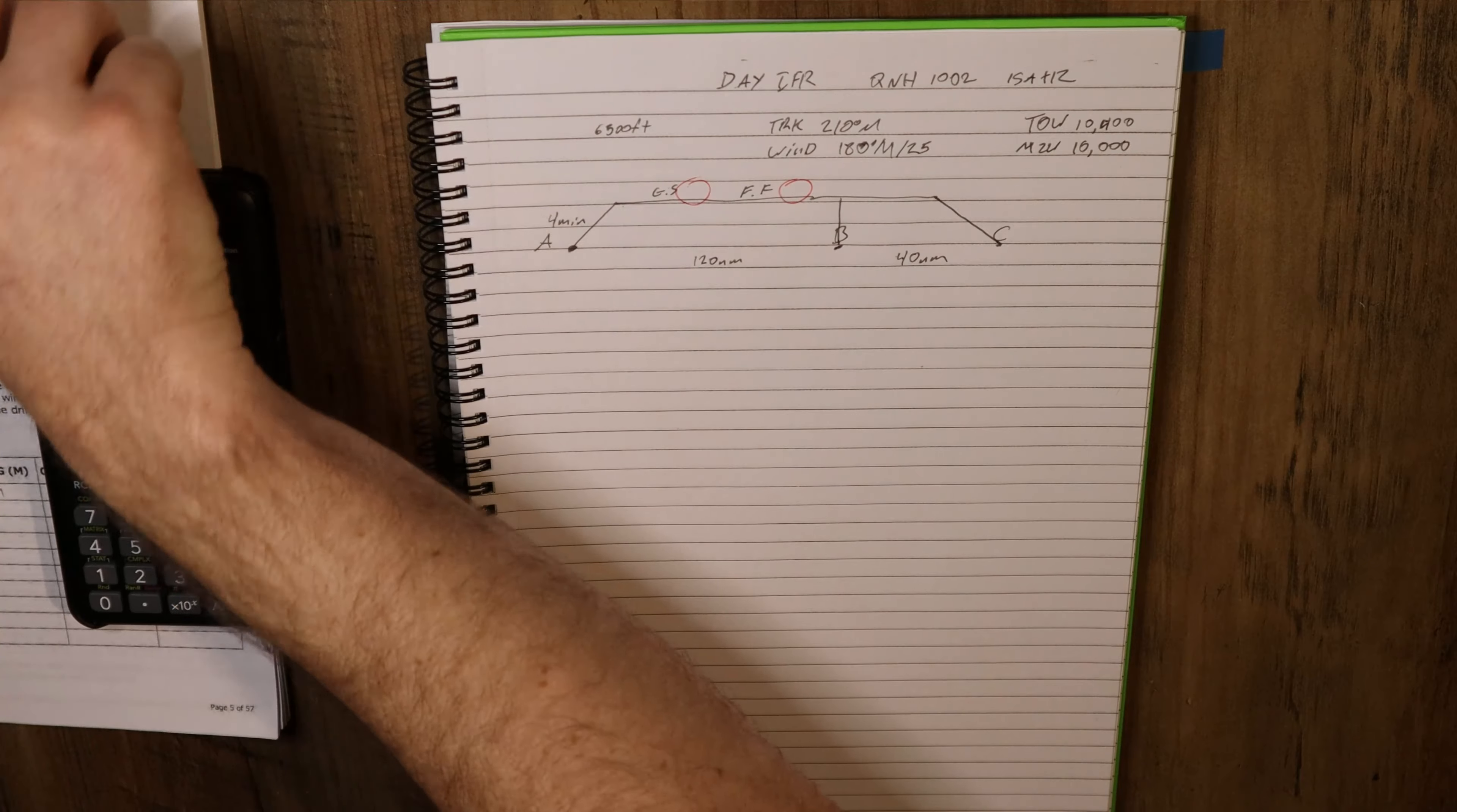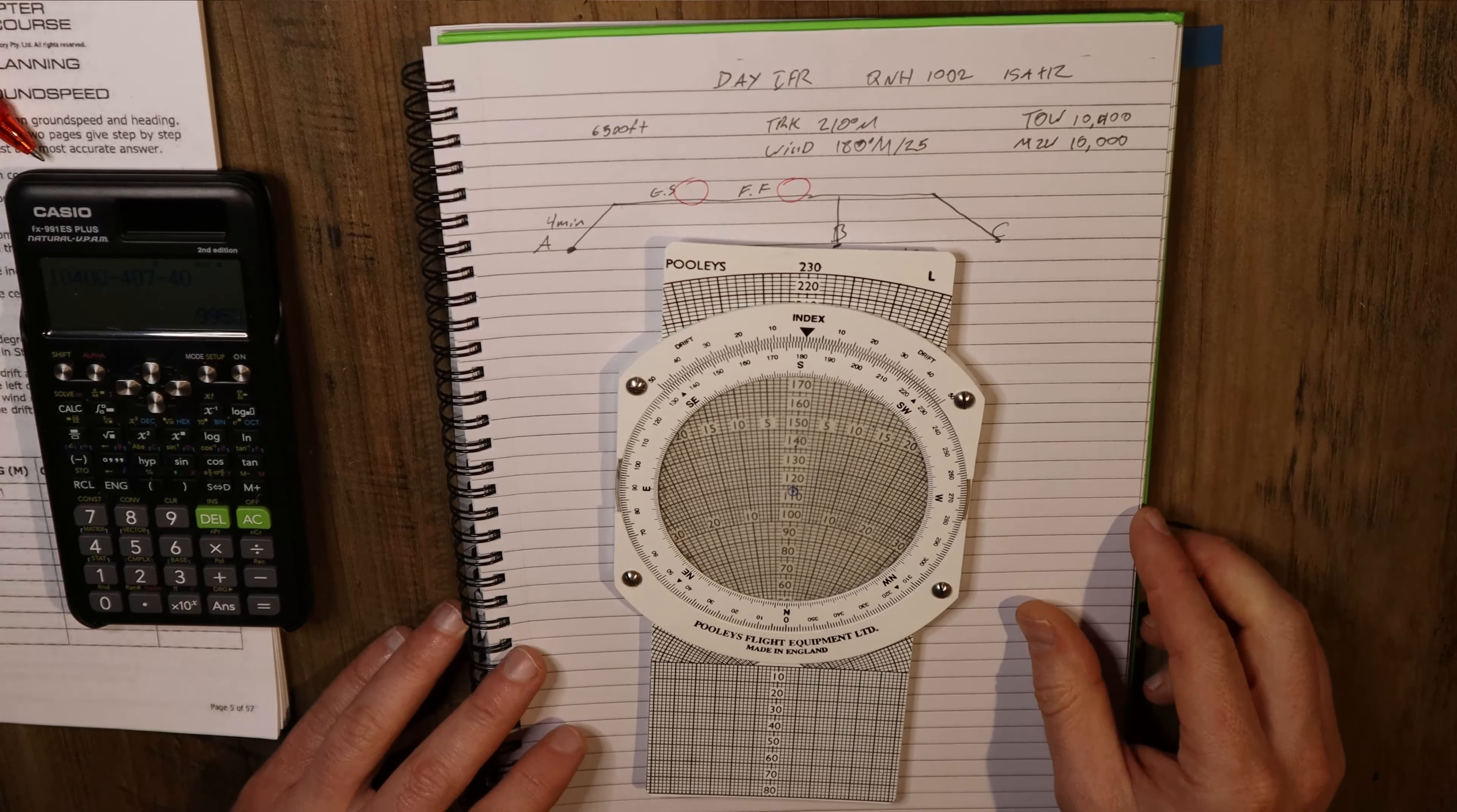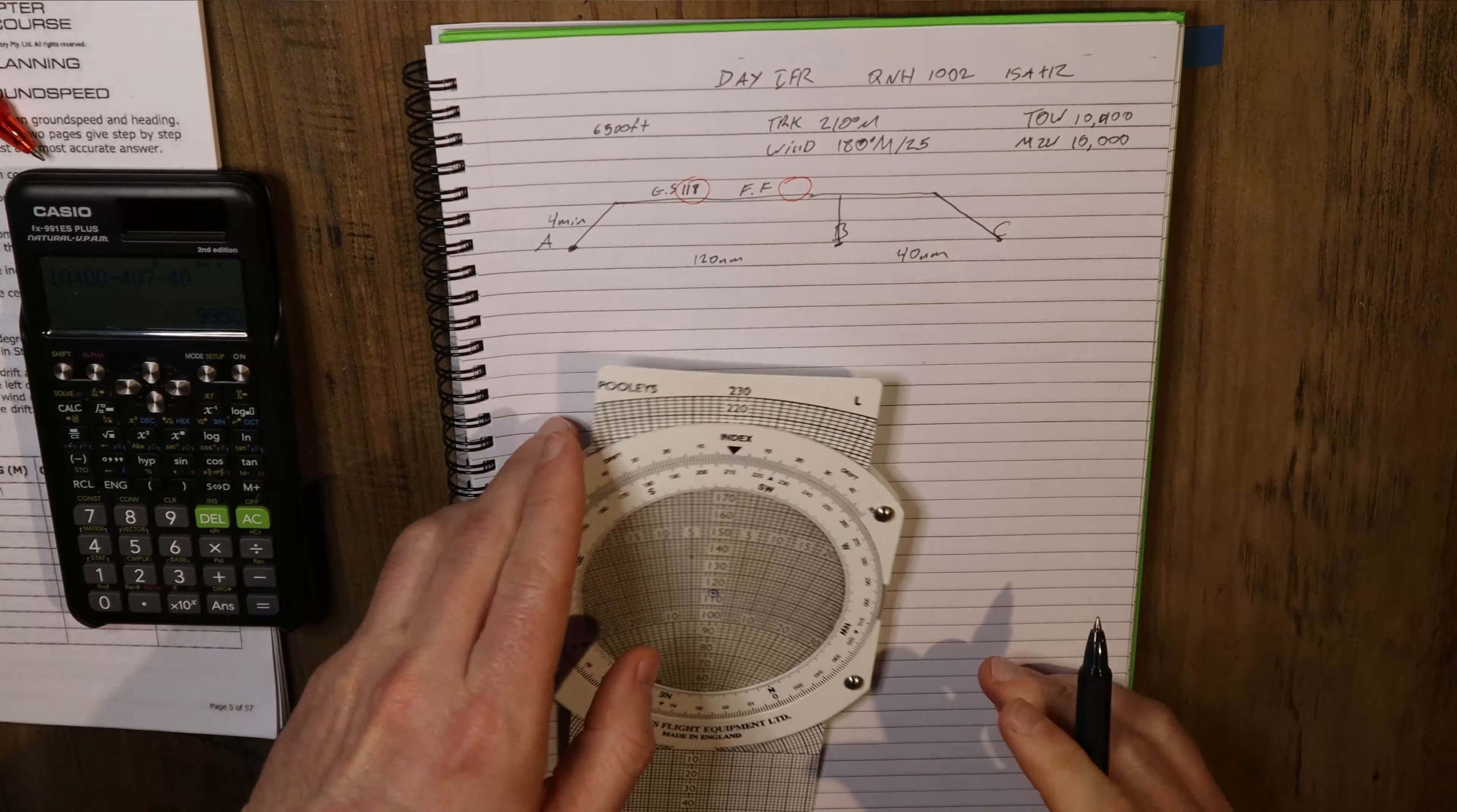The next thing I need to do is fill out my ground speed and my fuel flow. So we need to spin our winds. We've got our whiz wheel, and I've already marked it. Our wind was 180 magnetic. Something to note about the wind - make sure you know whether your wind is in magnetic or true. They might give it to you in true in the form of a TAF or terminal forecast, in which case you have to do the variation yourself. Here's the wind still set up from the last video: 25 knots at 180, 210 was our track. That gives us 118 ground speed.